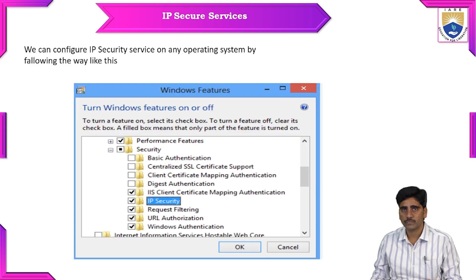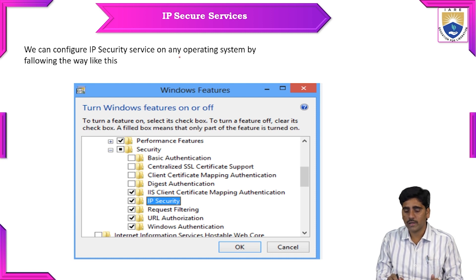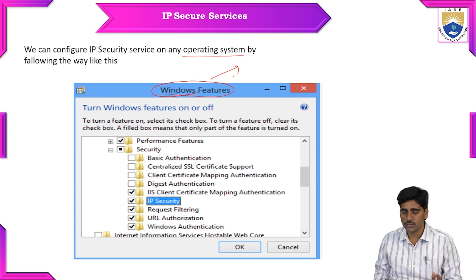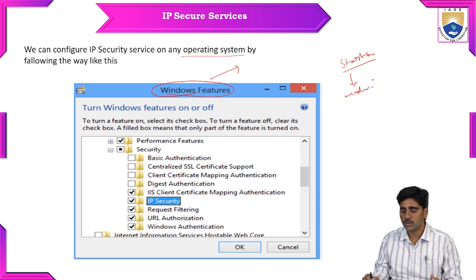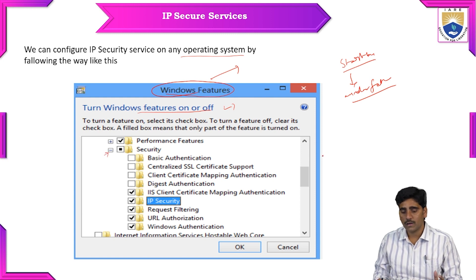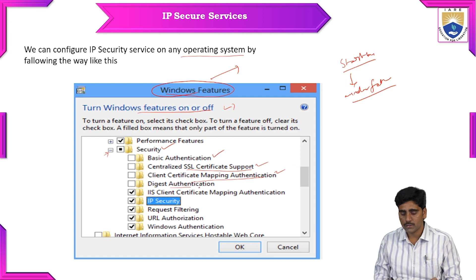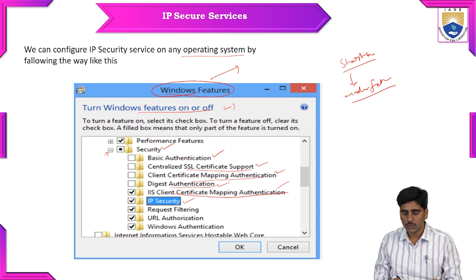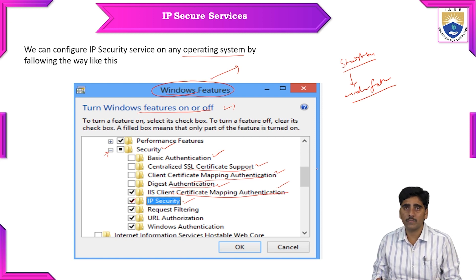We can configure IPsec as a service on any operating system. Open Windows Features on your operating system by clicking the Start button and selecting 'Windows Features' — it shows Turn Windows features on or off. Explore the Security service section, where you can see basic authentication service, centralized SSL certificate support, client certificate mapping authentication, digest authentication, IIS client certificate mapping authentication, and IP Security. Check IP Security and click OK to configure your system's IPsec service.